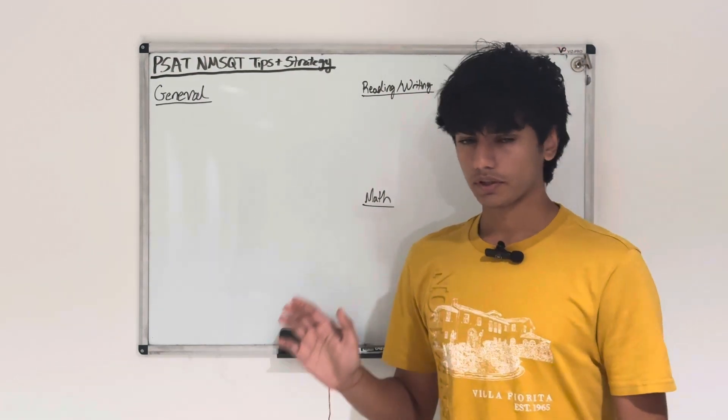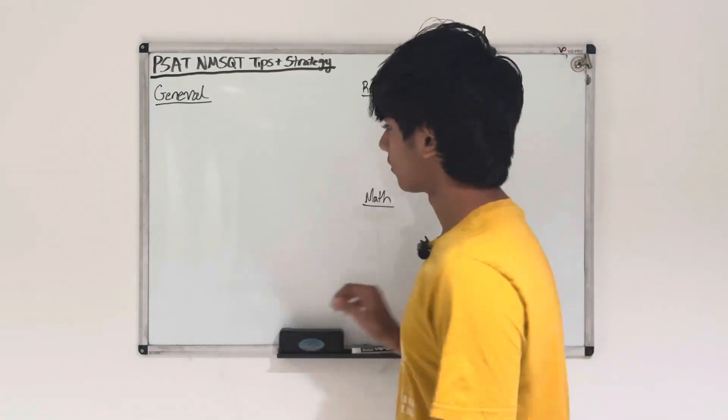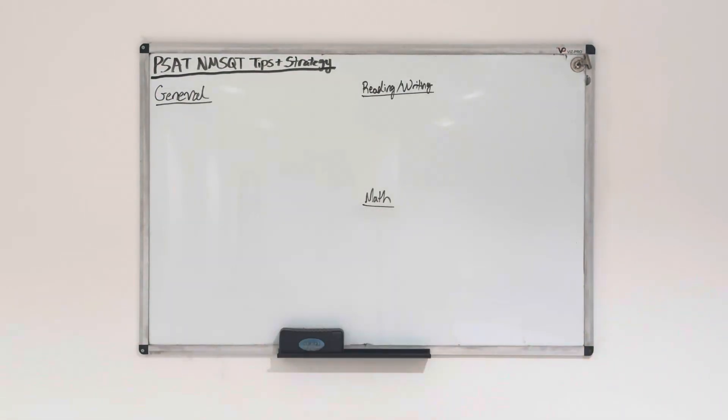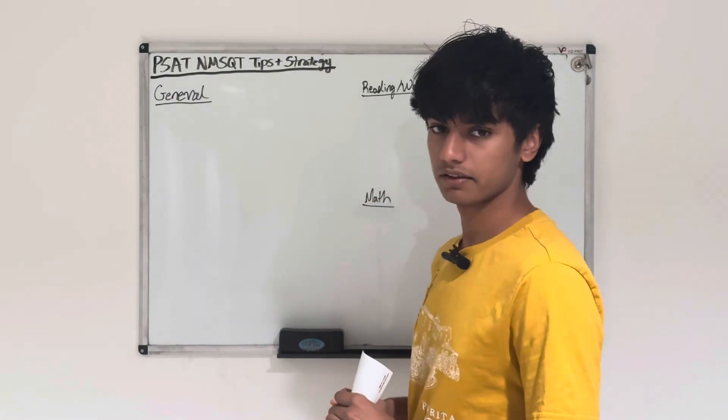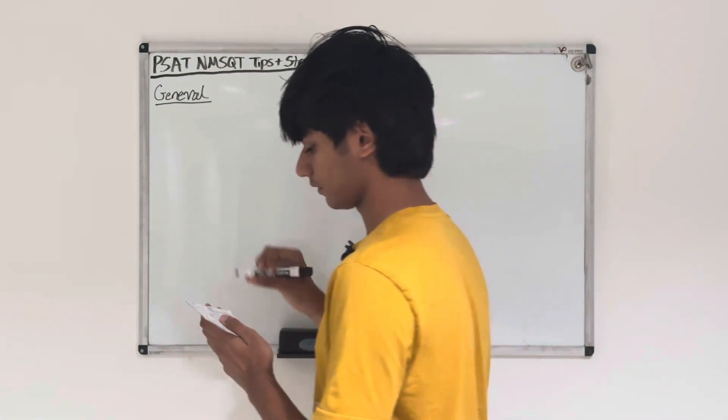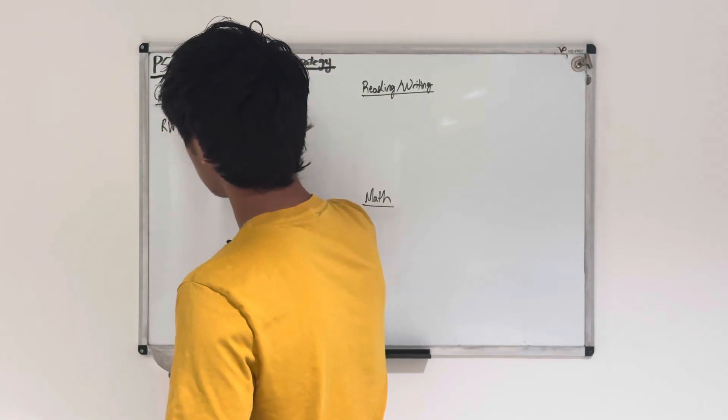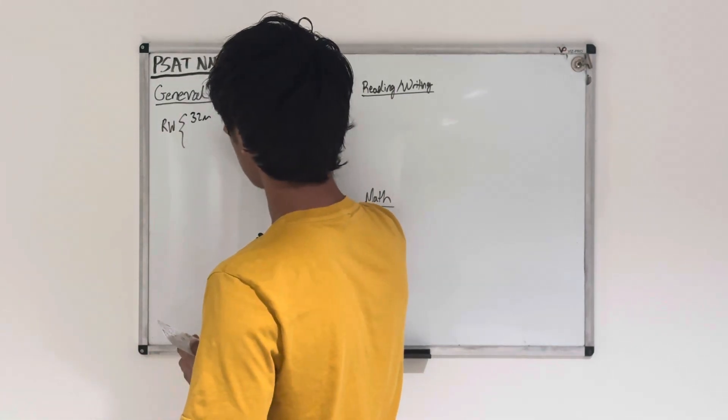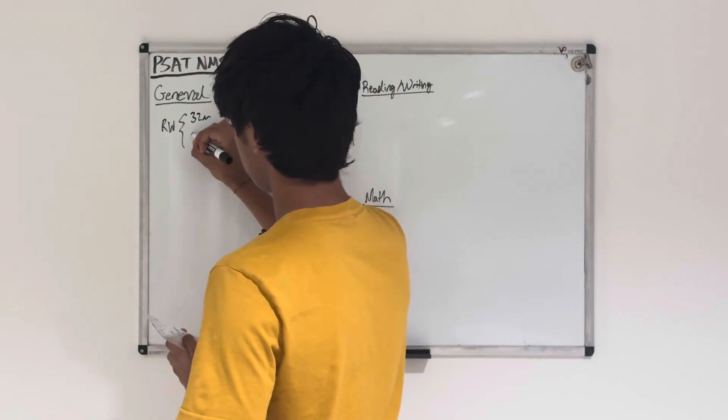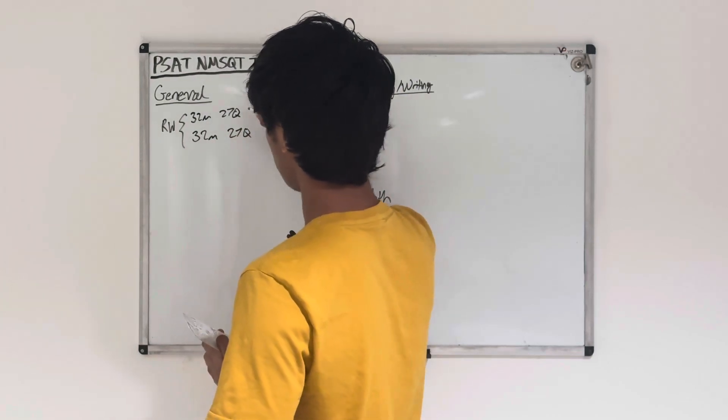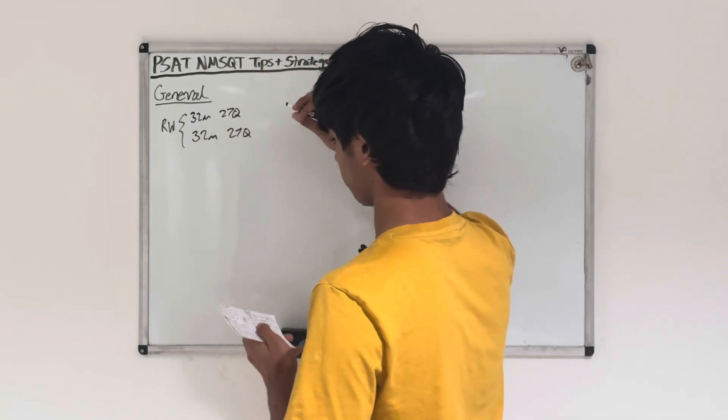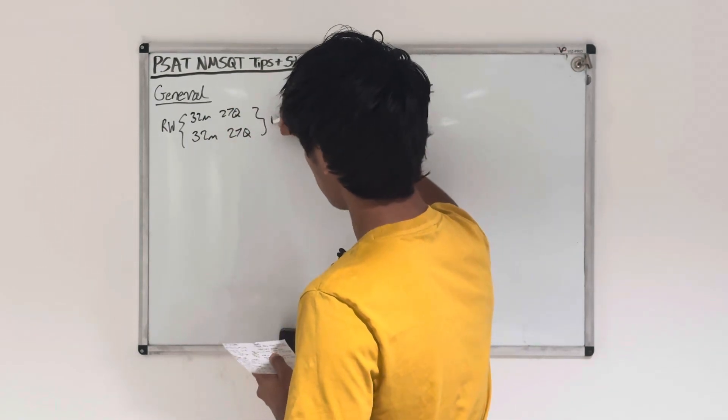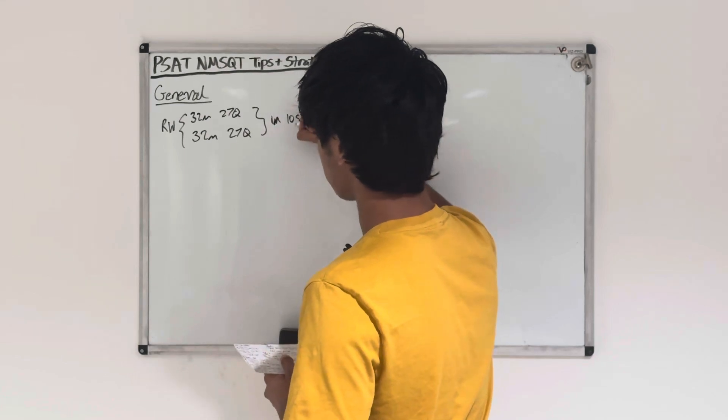To get started, I just want to go into the format of the test. If you've ever taken the SAT, the number of questions and timing is exactly the same. For reading and writing, you have 32 minutes and 27 questions, and 32 minutes and 27 questions for the second module. So two modules each have 27 questions. If you do the math, that means you have to spend one minute and 10 seconds per question.